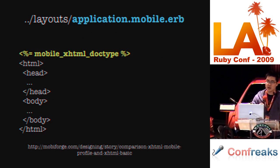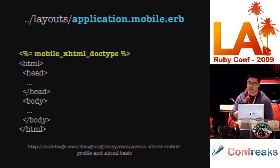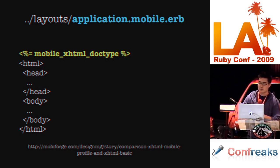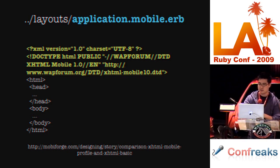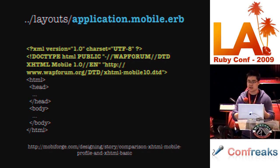There are some extra helpers in MobileFu. One of them allows you to output the XHTML doctype. It's important to do this because on some phones — specifically the iPhone — if you don't do this, the page will actually appear zoomed out. There's also a link in the docs with a comparison showing all the different tags supported across all the different XHTML doctypes.